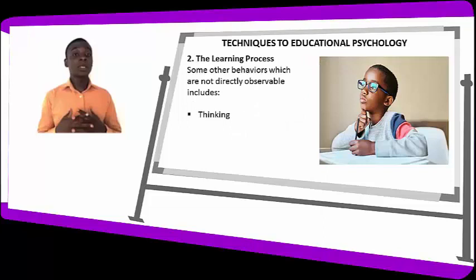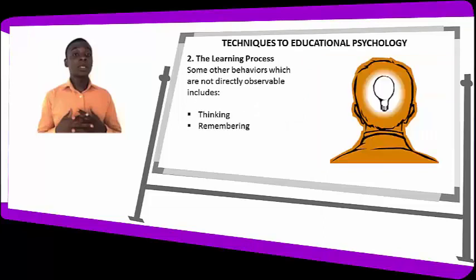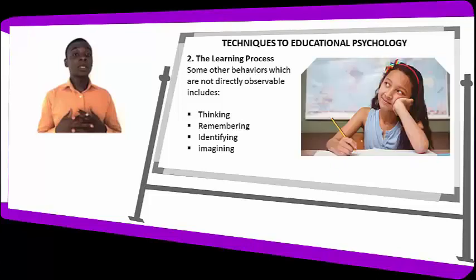Some behaviors which are not directly observable include thinking, remembering, identifying, processing, and imagining. When we learn, we think for a solution or formula, try to remember, identify things, process information in our brain, and imagine how things look. These learning behaviors are all part of the learning process.